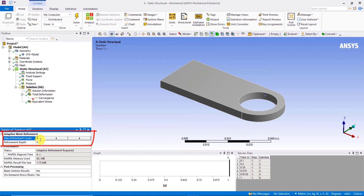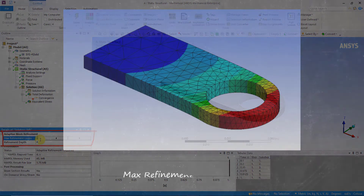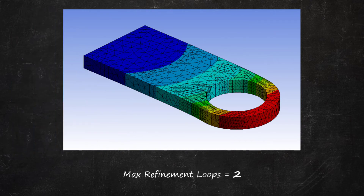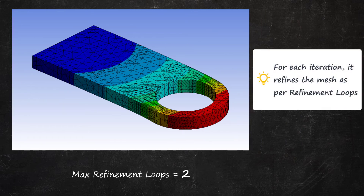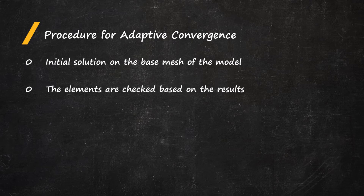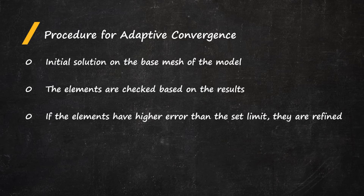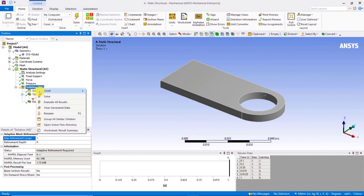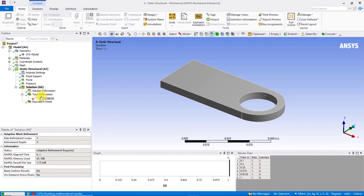Another property we need to define is the maximum number of refinement loops. This property enables you to change the number of refinement loops the application performs. The default is 1, meaning within one iteration it will try to refine the mesh only one time and report the results. In general, the procedure for adaptive convergence starts from an initial solution on the base mesh, then the elements are queried for their solution information. If the element's results have a higher error, the element is placed in the queue to be refined. The application then continues to refine the mesh and perform additional solutions. Note that adaptivity will be more robust if your initial mesh is with tetrahedrons.